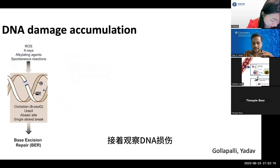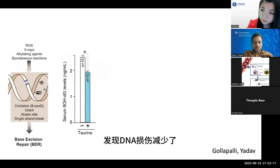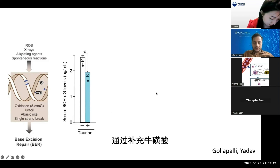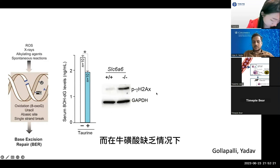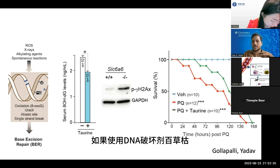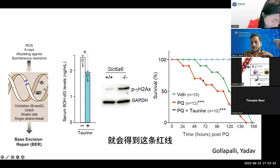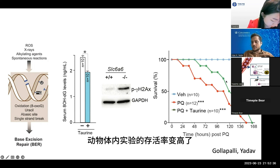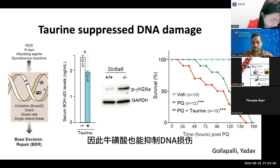Next, we looked at DNA damage, and found that DNA damage was reduced by taurine supplementation, while taurine deficiency led to more DNA damage. When animals were treated with the DNA-damaging agent paraquat, they showed reduced survival — represented by the red line — but treatment with taurine improved survival in vivo. Thus, taurine suppresses DNA damage.